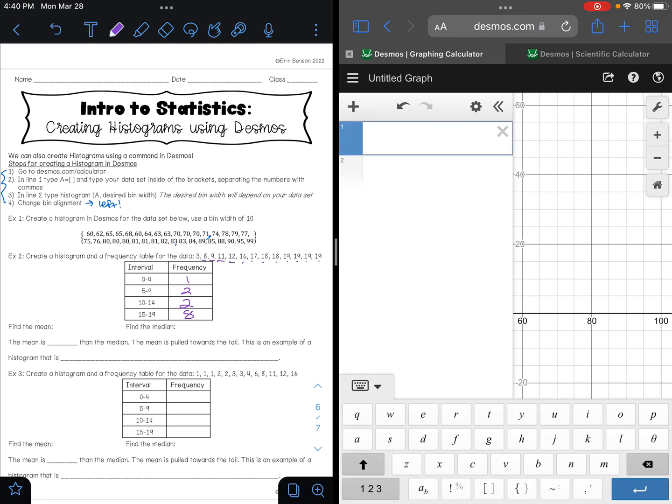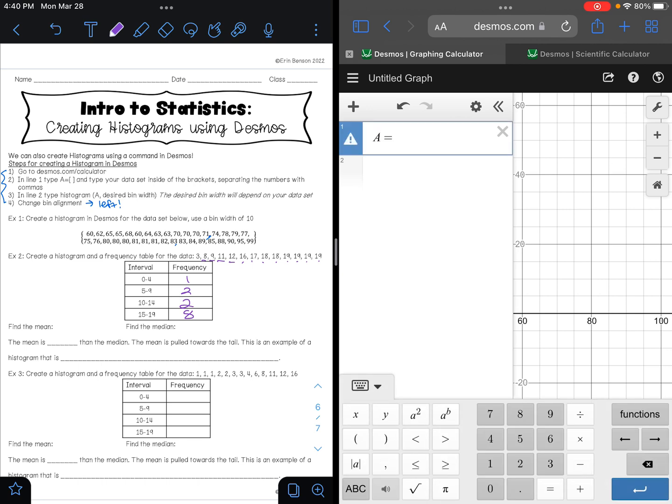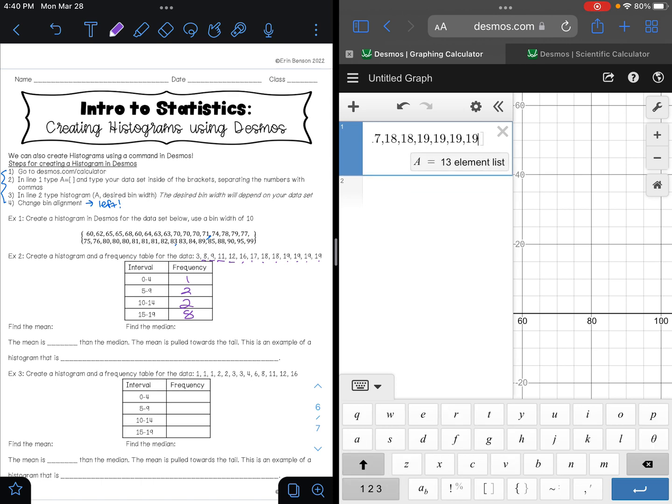So my list A will have the numbers 3, 8, 9, 11, 12, 16, 17, 18, 18, 19. Looks like four 19's, so 1, 2, 3, 4. And I should have 13 elements and I do, so that is good.